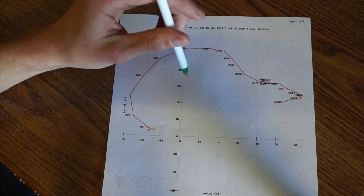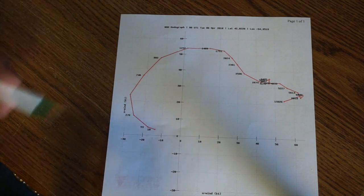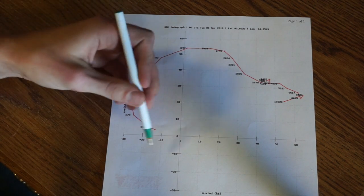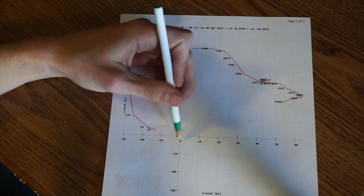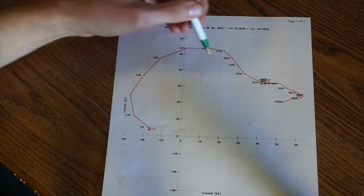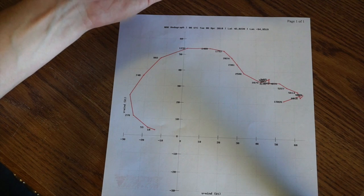And you can also use hodographs to estimate the prediction of the direction of the storm itself. So let's say, again, this is a thunderstorm. You would always start at your point of origin. You can kind of average out all the wind speed and direction. There is an equation for it.